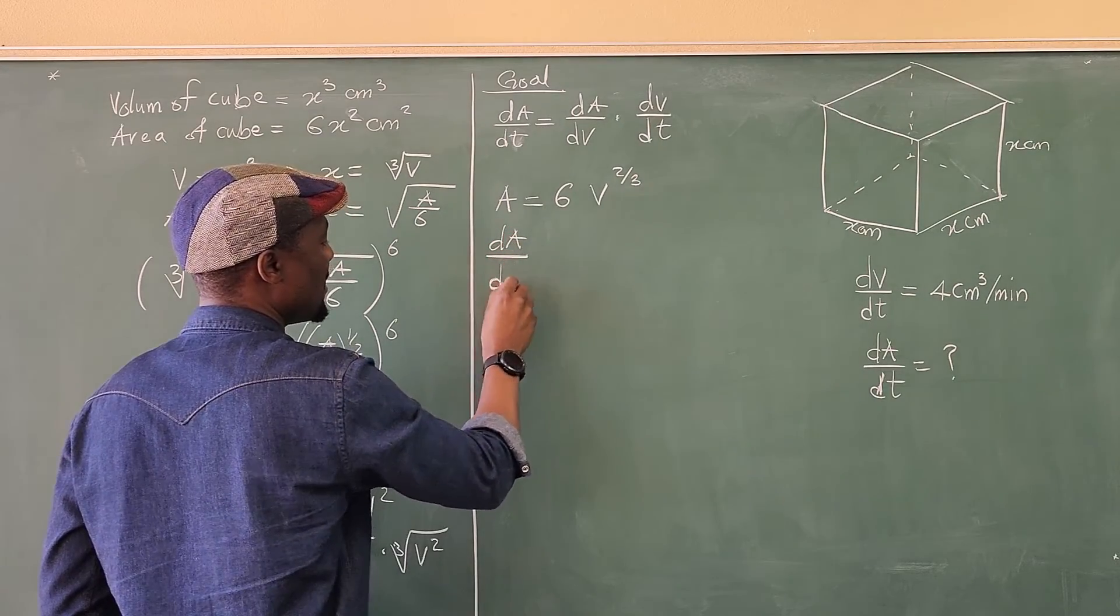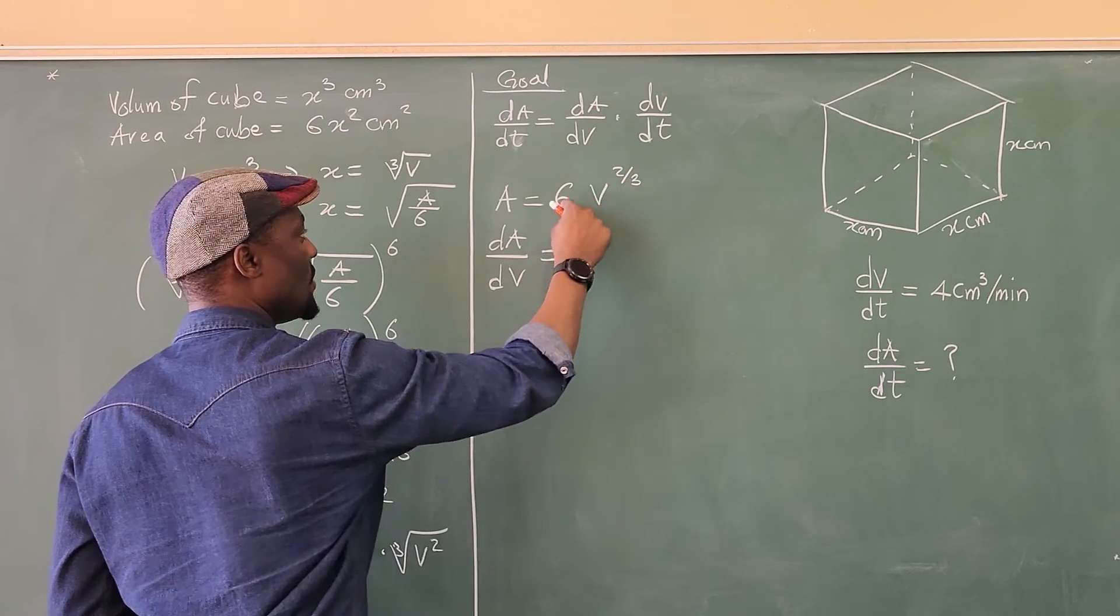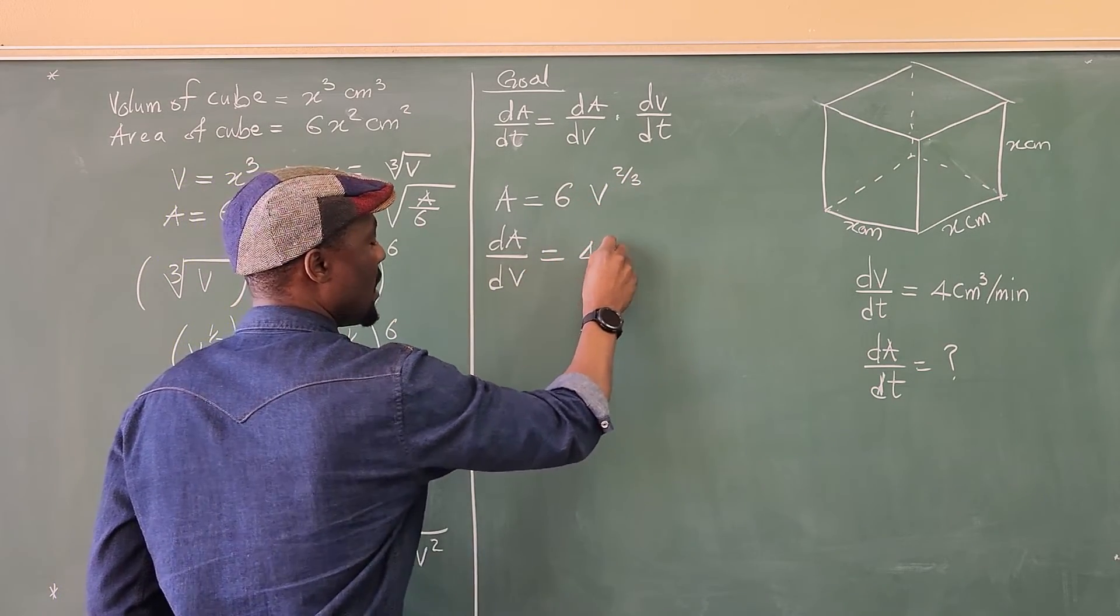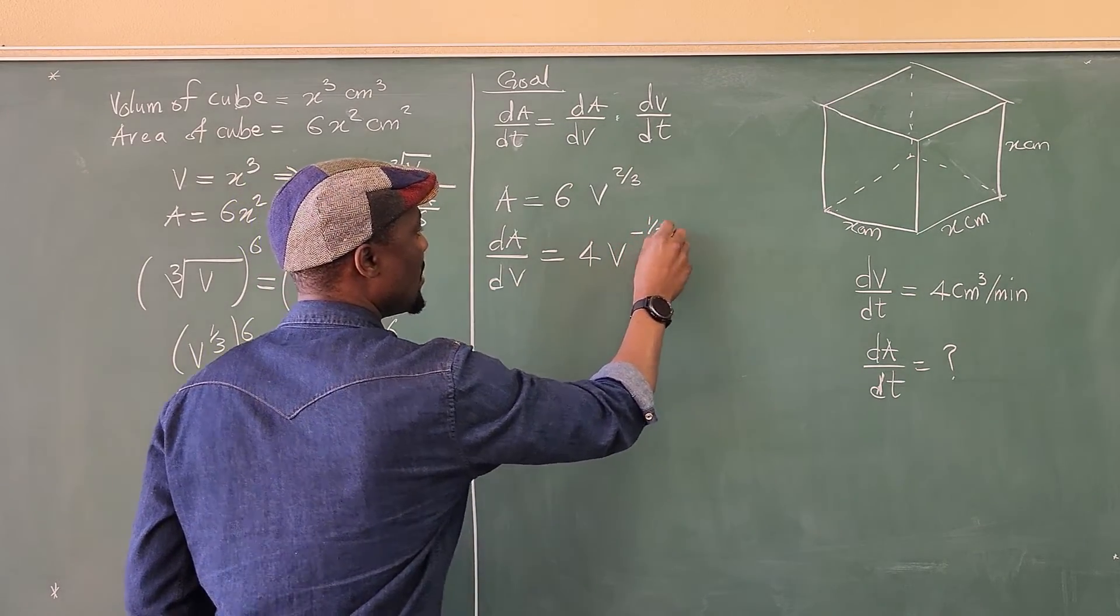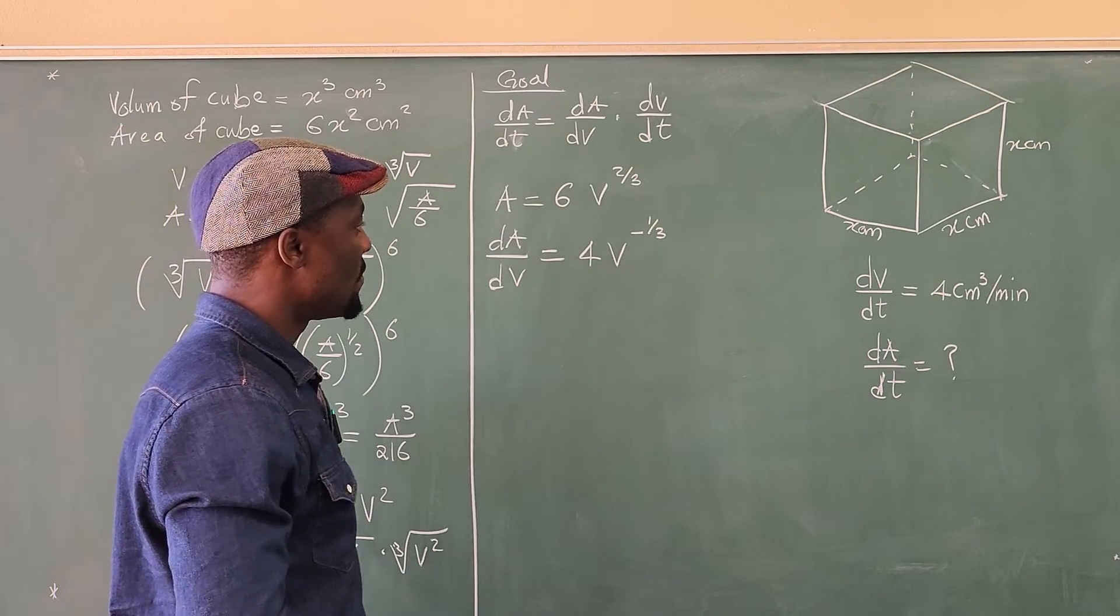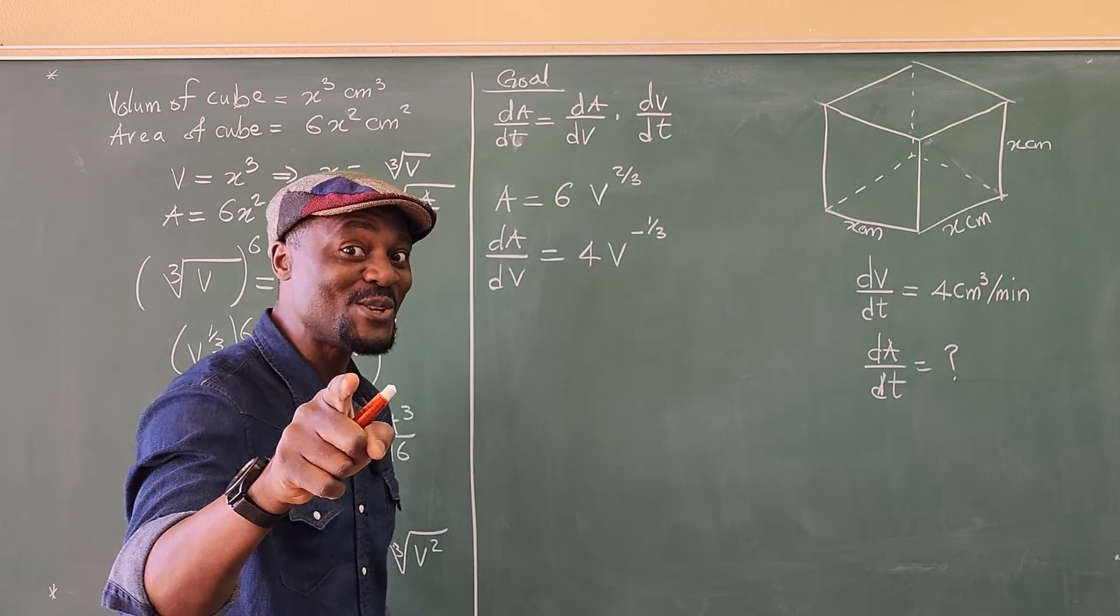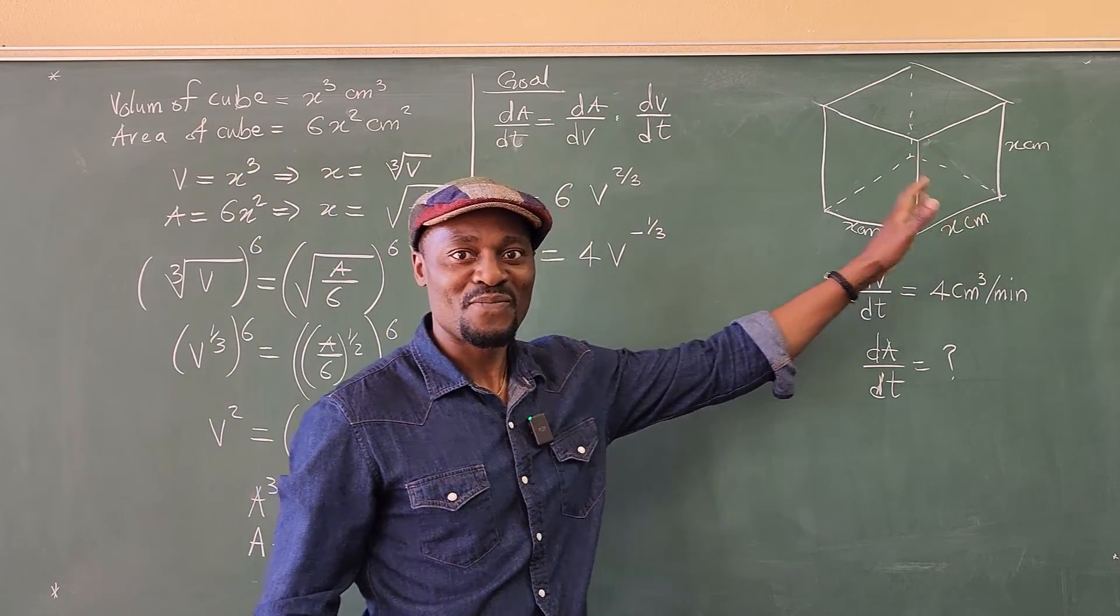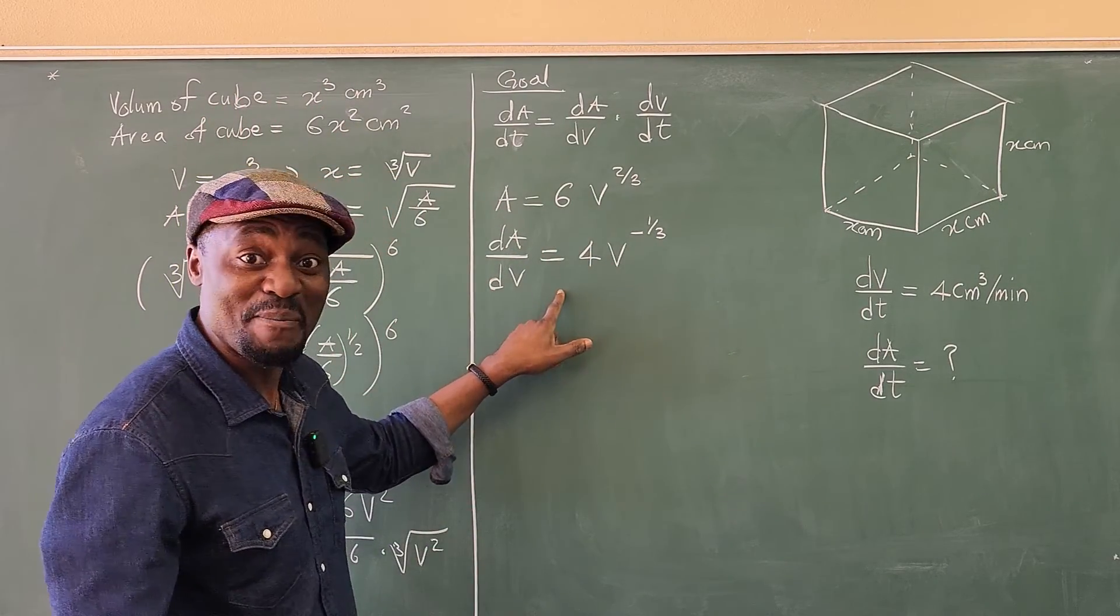dA/dV is going to be if you multiply two thirds by six, you're going to end up with four and V raised to power minus one over three. That's one over the cube root of the volume. Come on, what's the cube root of volume? Let's even say you computed the volume. The volume is x cubed. This is cool. Let's clean this up.